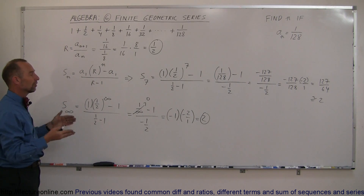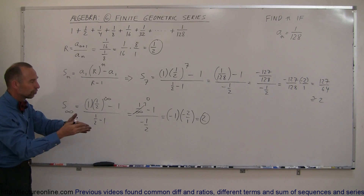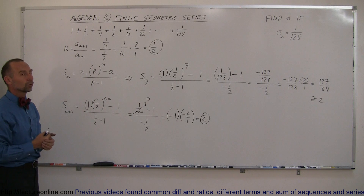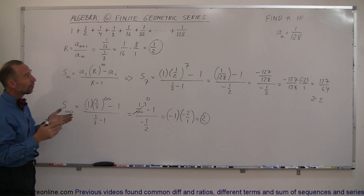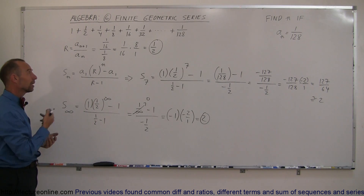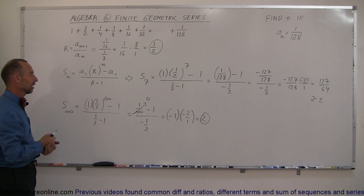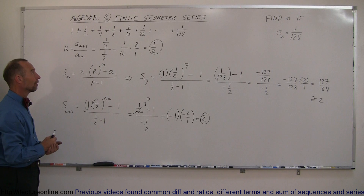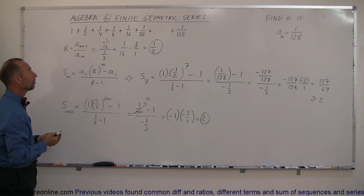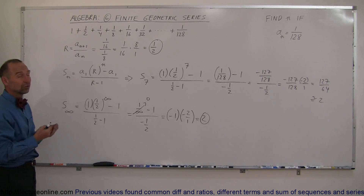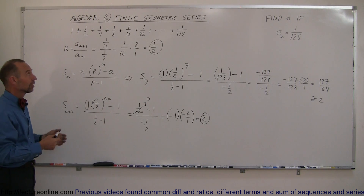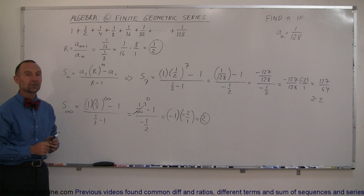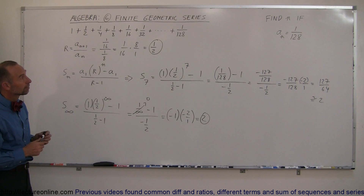So if you keep adding terms out to infinity, the total sum of this geometric series equals 2. The more terms you add, the closer and closer you get to 2, and eventually with an infinite number of terms you reach 2. This particular series converges — that's not always the case, but in this case it does.